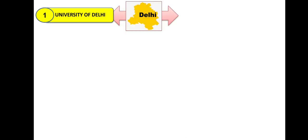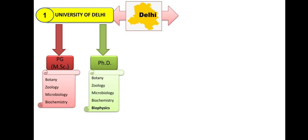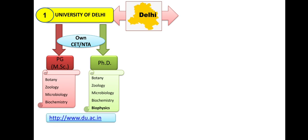In Delhi, as seen in the last video, there are seven Central Universities, and among those seven, four universities have Biological Sciences. First is Delhi University (DU): MSc in Botany, Zoology, Microbiology, and Biochemistry. PhD is available in Botany, Zoology, Microbiology, Biochemistry, and also Biophysics — PhD in Biophysics is available only in DU among Central Universities. Admission may occur through their own entrance or through NTA — National Testing Agency.